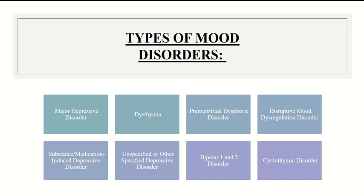Cyclothymic disorder is usually diagnosed in children. The difference between bipolar disorders and borderline personality disorder is that BPD is characterized by switches in mood that are more frequent — minutes to hours depending on the day — whereas bipolar mood episodes last weeks.